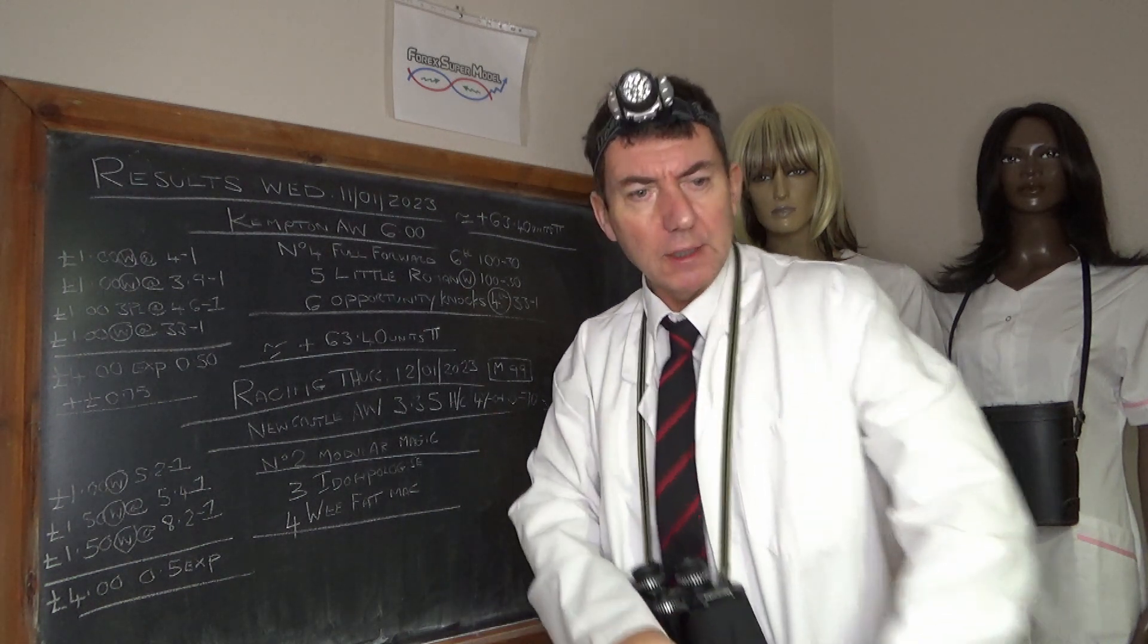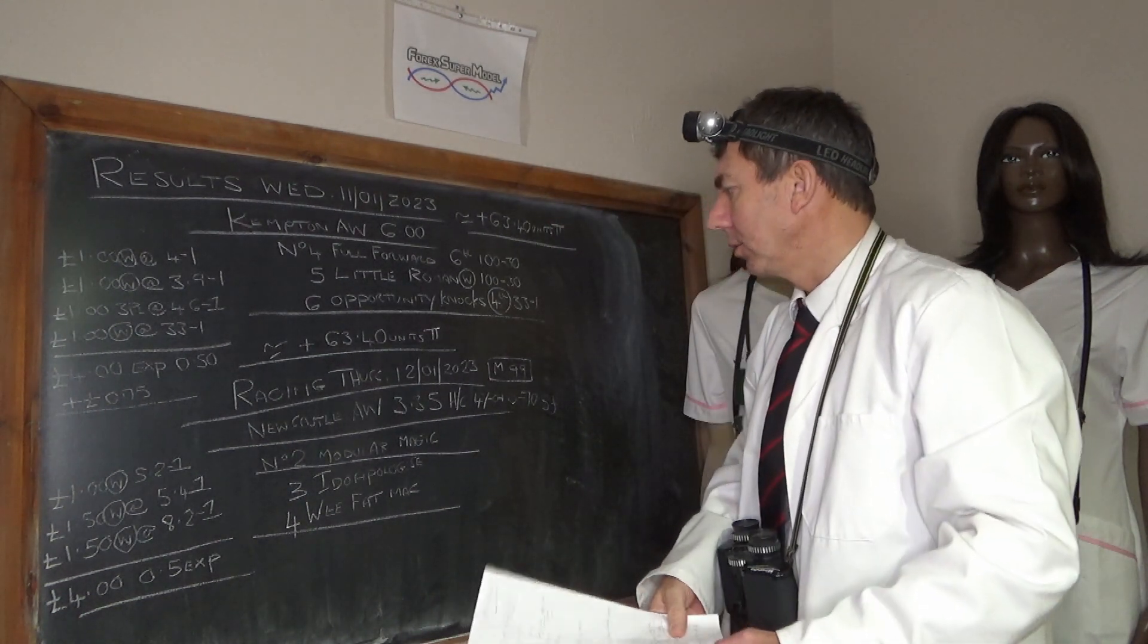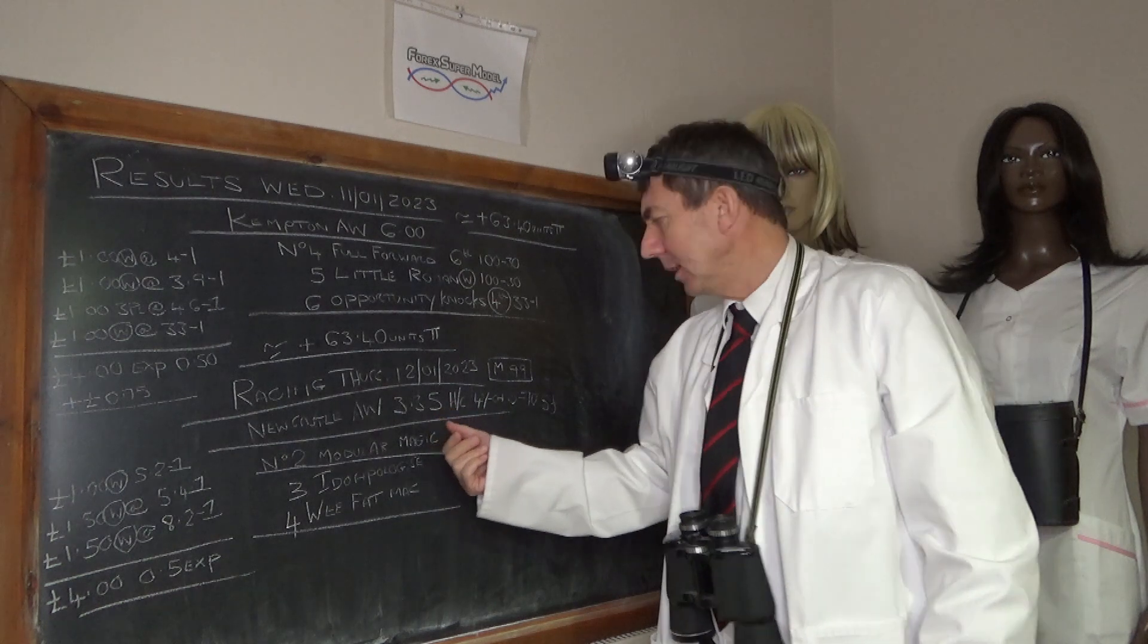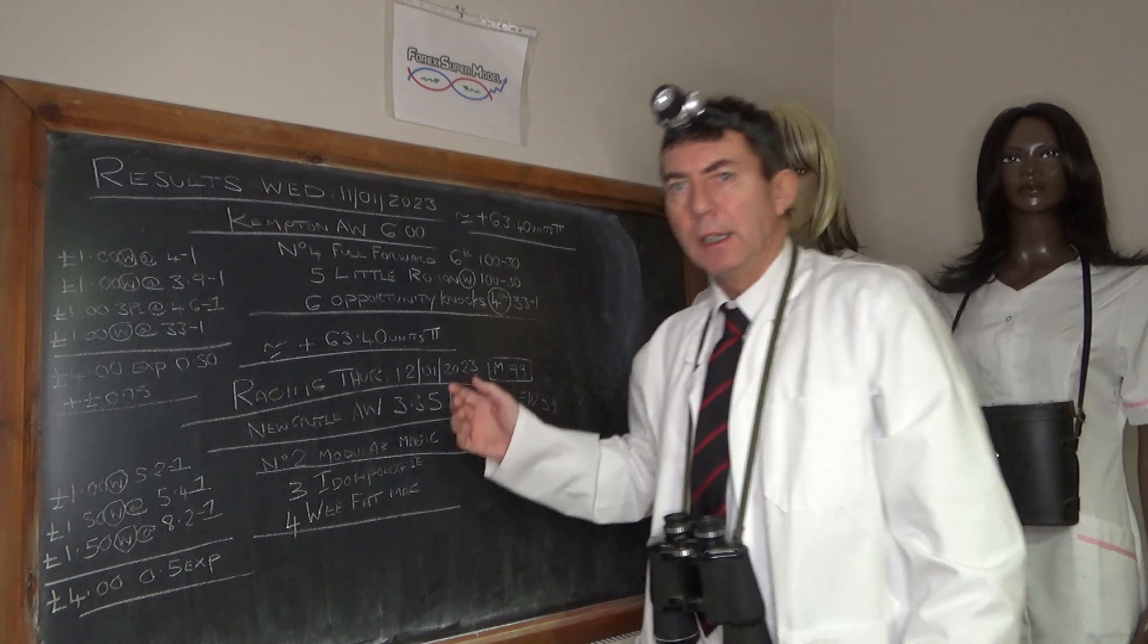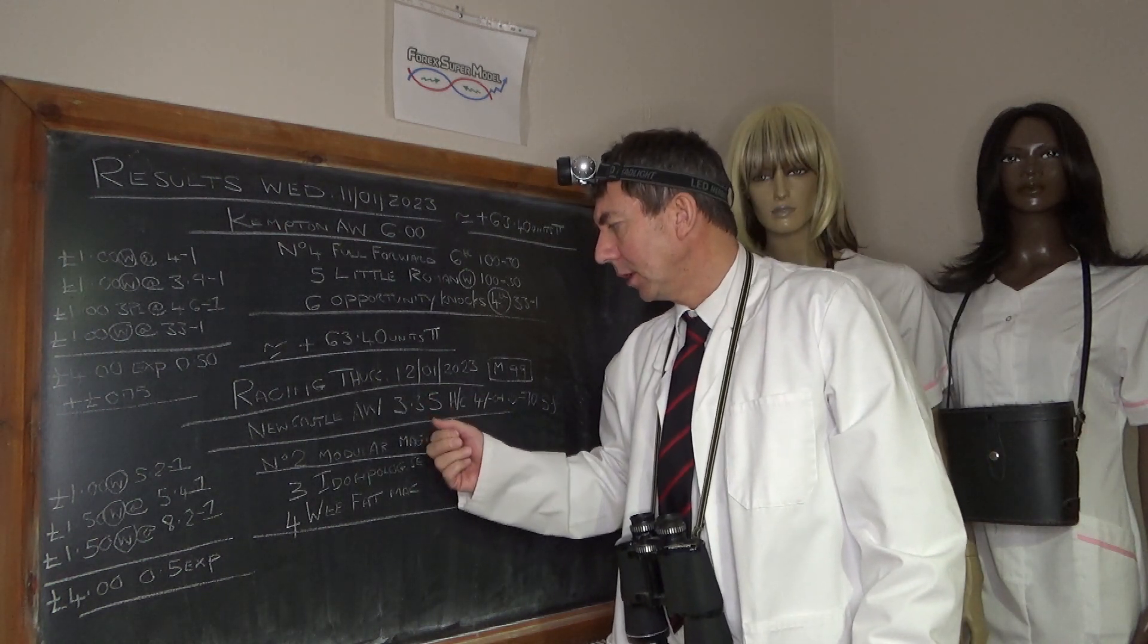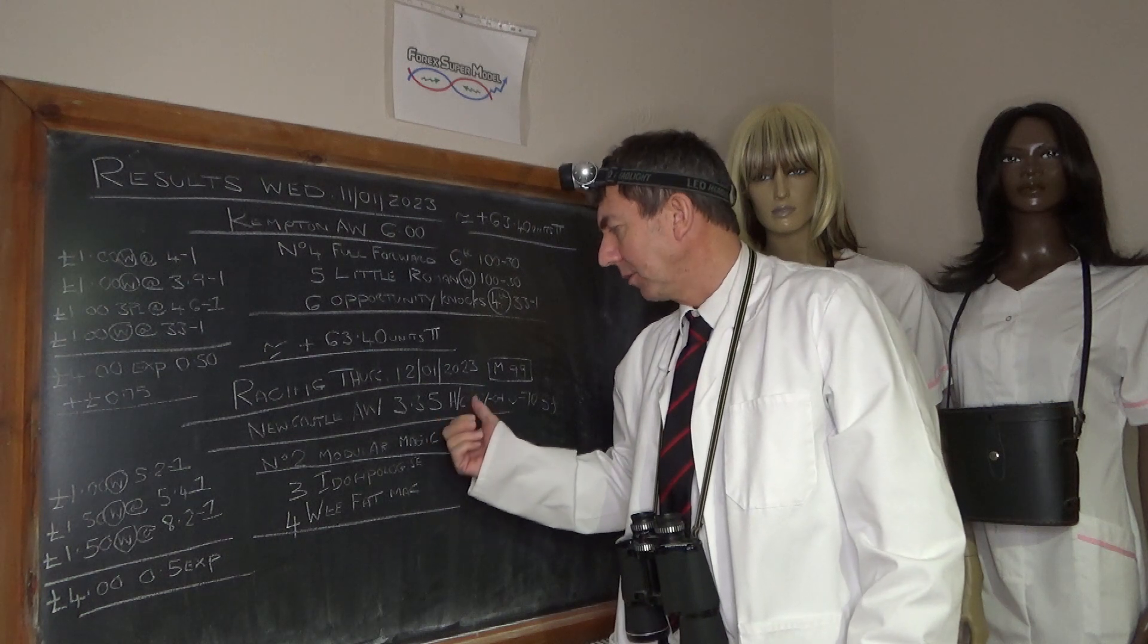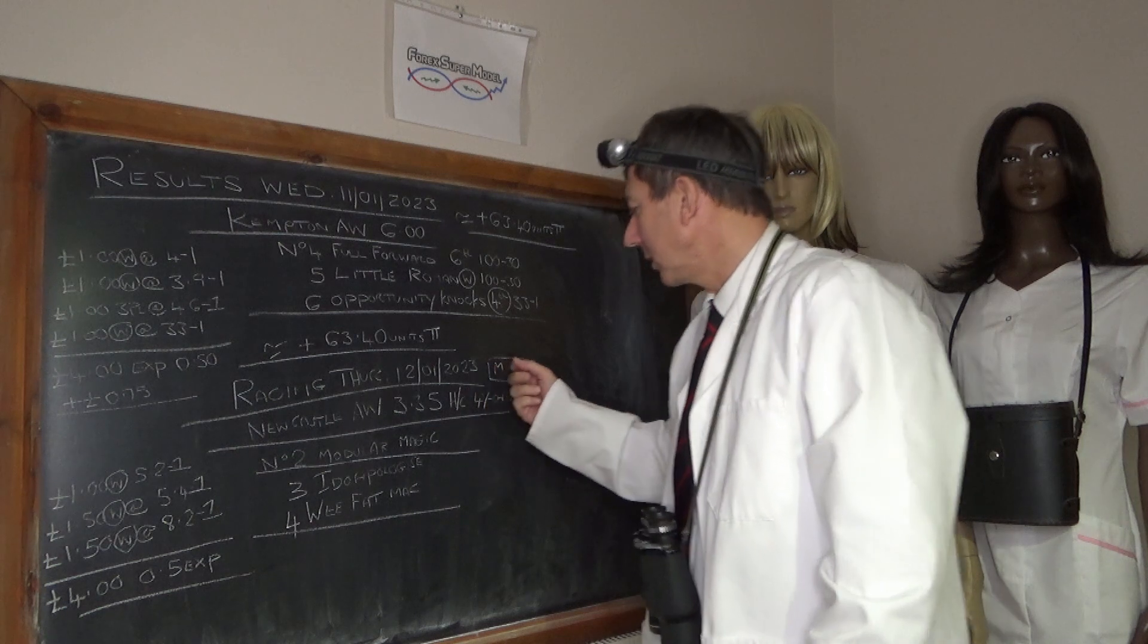Now today, I'll just grab this. We've got a race at Newcastle on the all-weather, it's the 335, it's a handicap four-year-old 0-75 furlongs, model 99. We'll talk about that in a minute. So it's the last race at Newcastle, it's a five furlongs so it's a straight five on Newcastle all-weather, model 99 which is quick.